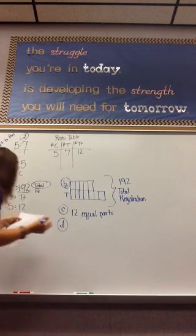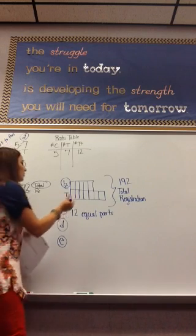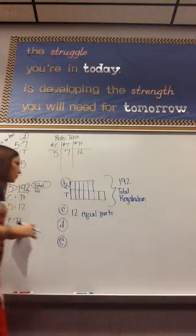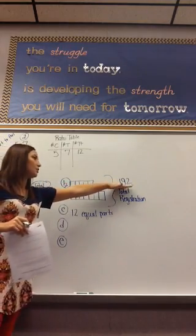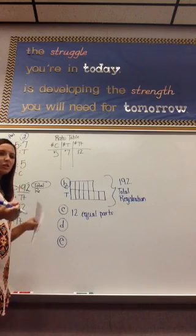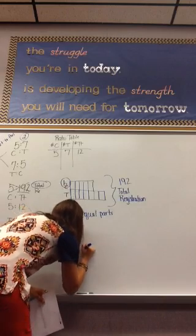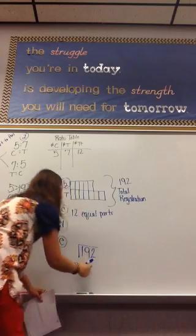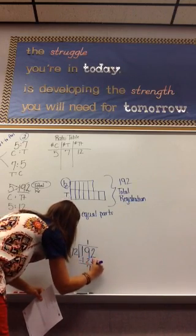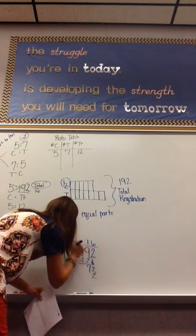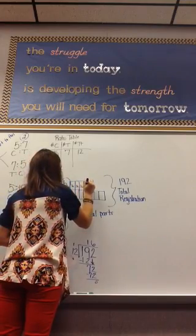Okay. So E asks, what does the value of each individual part of the tape diagram represent? So now we need to know what goes in each equal part. If you have 192 and it's broken into 12 equal parts, what operation could we do to find the value of each part? And I hope you said divide because divide is how we break into equal parts. So I could take 192 and I would divide it by the 12 equal parts. And you should get 16. So each part is worth 16.